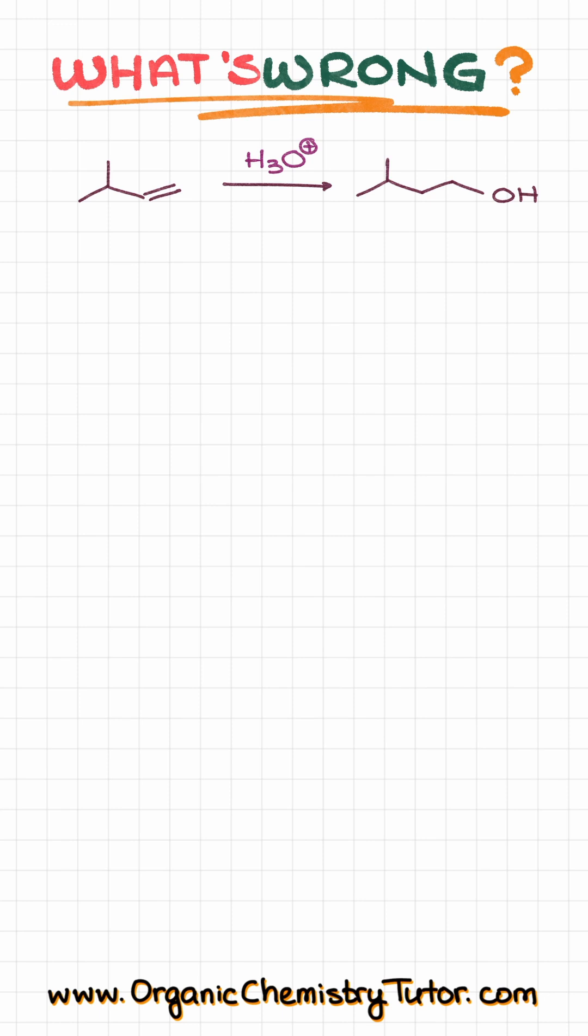First of all, as a starting material over here, we have an alkene, and for our product, we get an alcohol. However, my OH is sitting over here on the primary carbon, which is the less substituted carbon. Products like that are sometimes called anti-Markovnikov products.